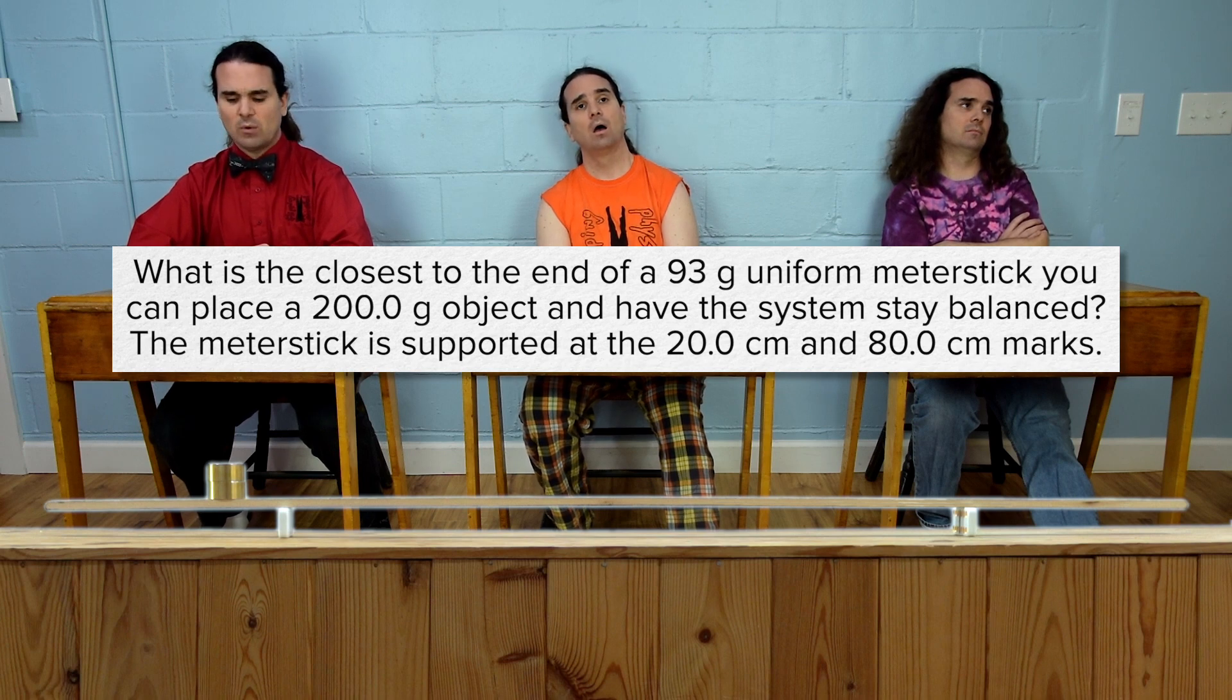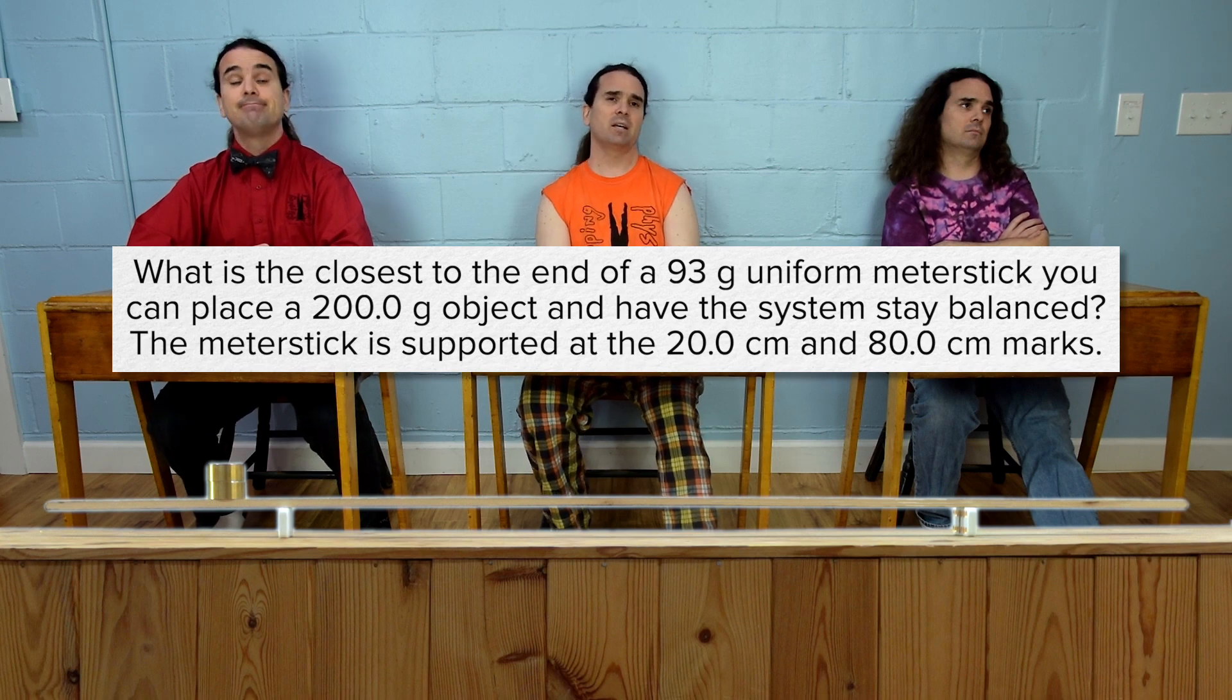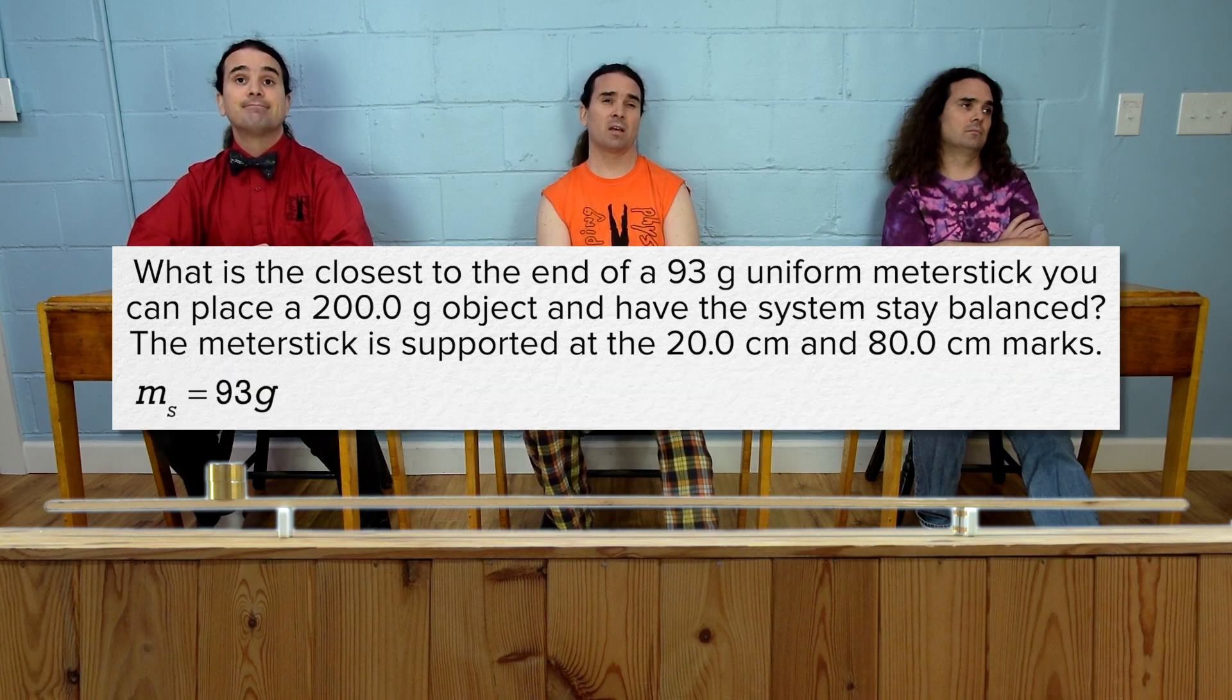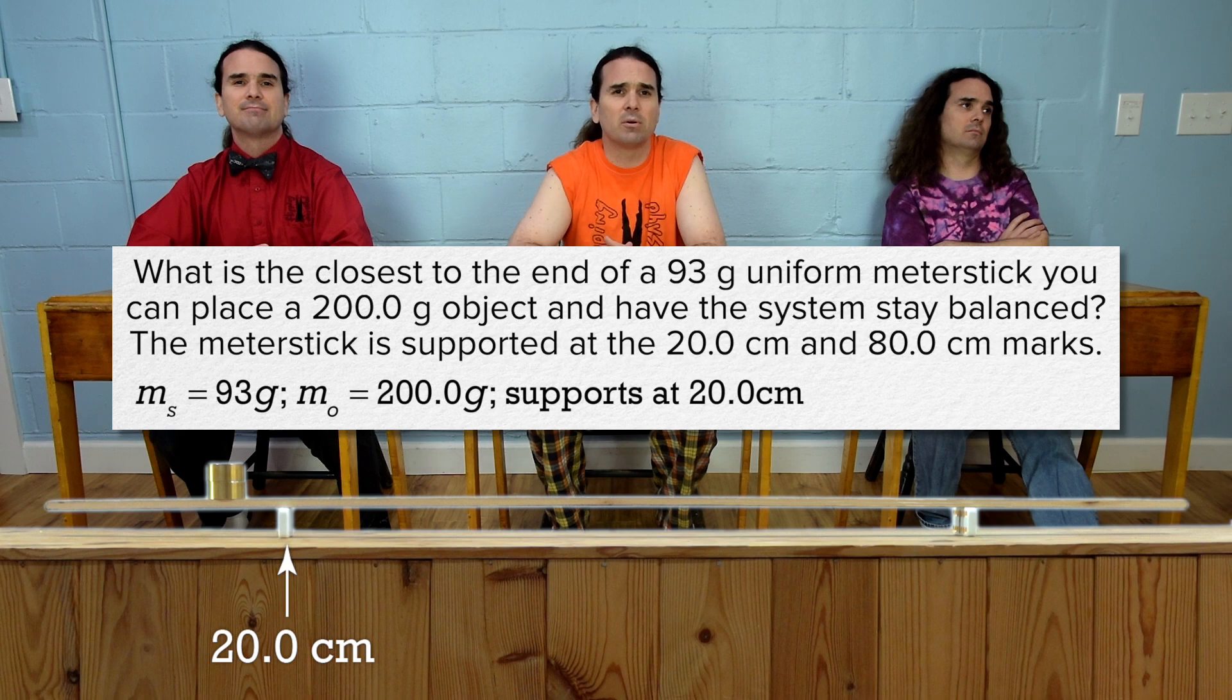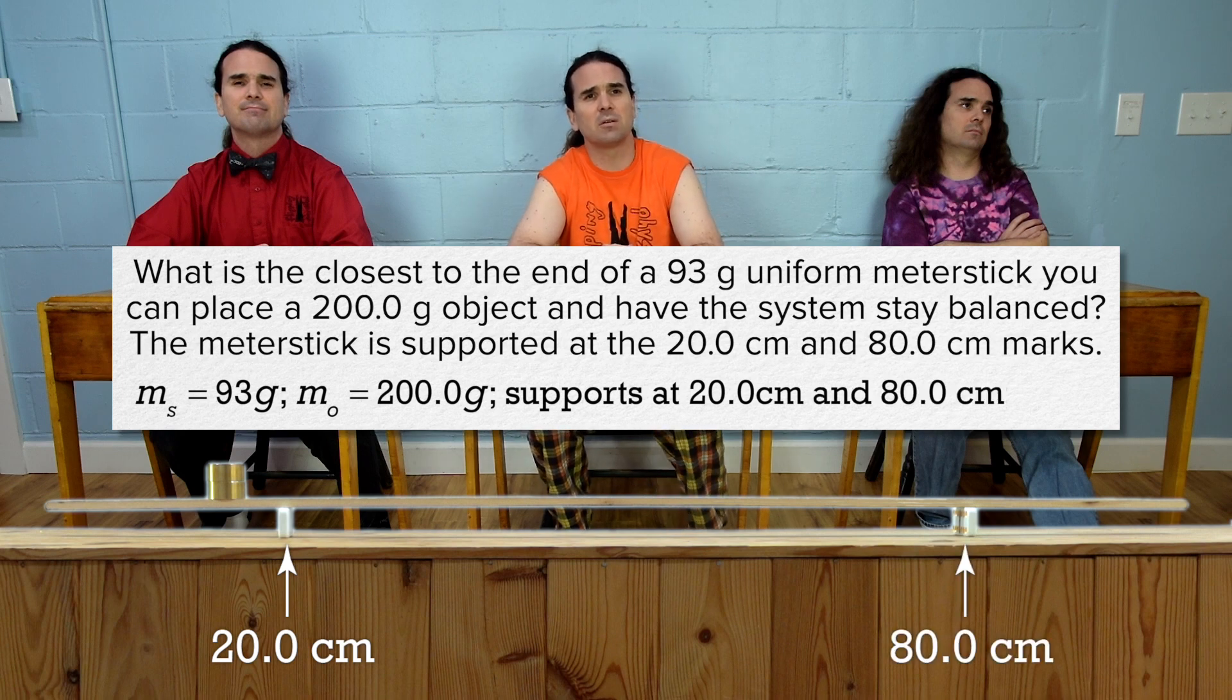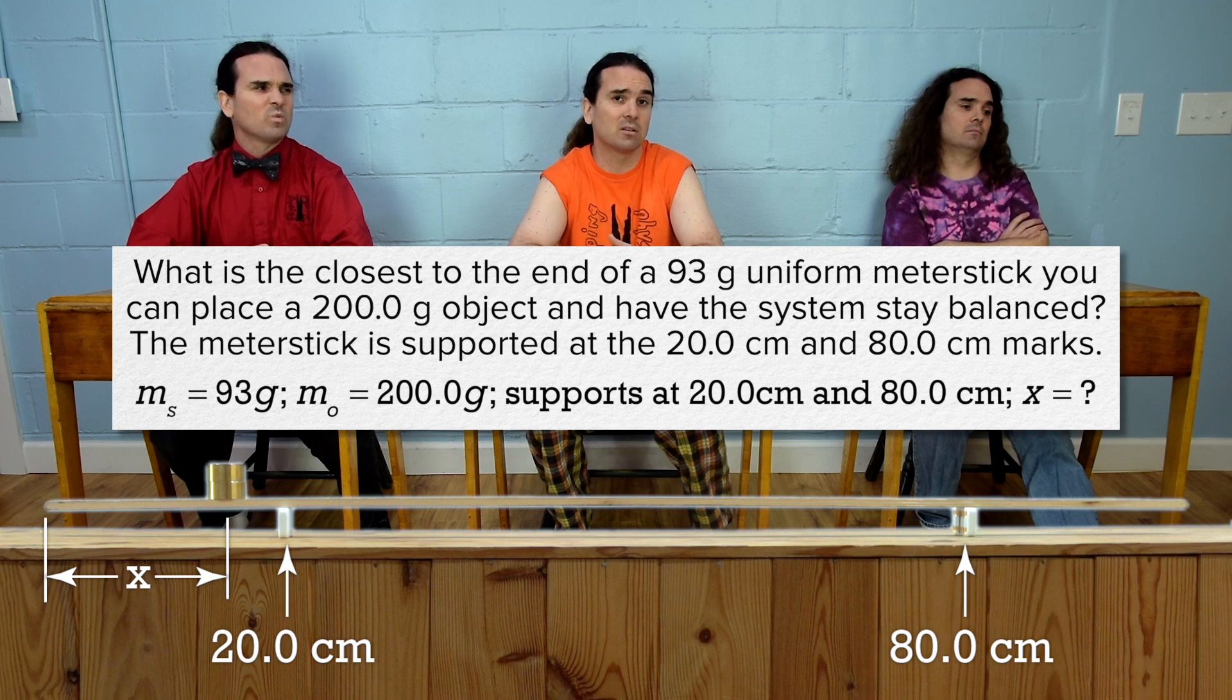The meter stick is supported at the 20.0 centimeter and 80.0 centimeter marks. The mass of the meter stick is 93 grams, the mass of the object is 200.0 grams, supports are at the 20.0 and 80.0 centimeter marks, and we are solving for x the location of the object.